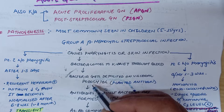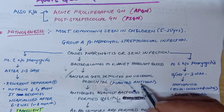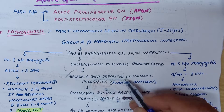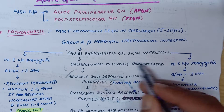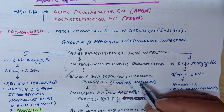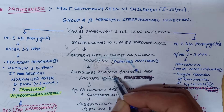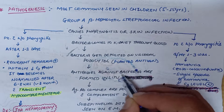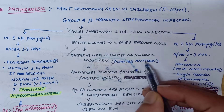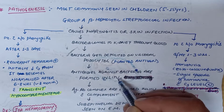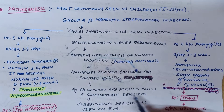Bacteria gets deposited on visceral epithelial cells, that is the podocytes, and it will result in a planted antigen. The bacteria will act as a planted antigen. Antibodies are formed against this bacteria acting as an antigen — that is, antibodies are formed against planted antigen in situ, that is inside the kidney. This antigen-antibody complex is formed in situ.